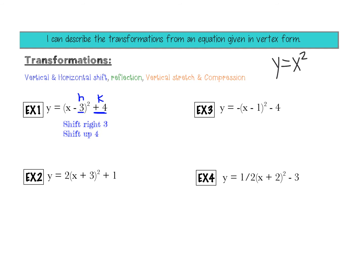For example 2, pause and identify A, H, and K and what those values do to the graph. The answer: it shifts left 3 because H is negative — minus and negative becomes plus, so it does the opposite. It shifts up 1 because K = 1. And A = 2, which is not negative so no reflection, but it does give a vertical stretch of 2, meaning I'll double the parent table.